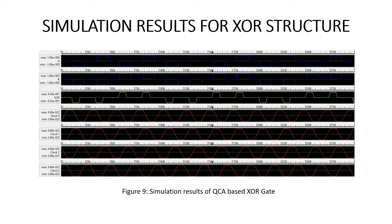Here we can see the different clocks. When positive clock edges arrive, the gate will be on; when negative edges arrive, the gate will be off. Based on the different clocks, we can see the output. Input A and input B are shown: when the two inputs are the same, the output will be zero; when two inputs are different, the output will be one, as we can observe here. Based on the different clocks, we can observe the output of the XOR gate.